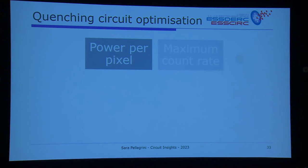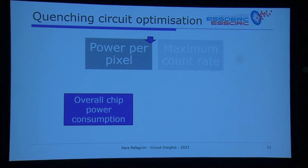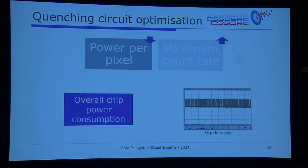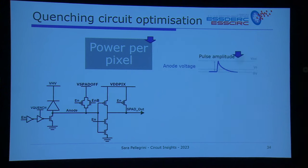Looking at figure of merits specific to the SPAD pixel, I'll highlight two: power and count rate. Power consumption of the chip is critical — with sensors everywhere in phones, cars, and IoT devices, reducing the power of each sensor substantially means winning. We want to reduce the impact on overall power consumption. The maximum count rate is the other key metric — we want to increase it to high levels to measure high signal rates.